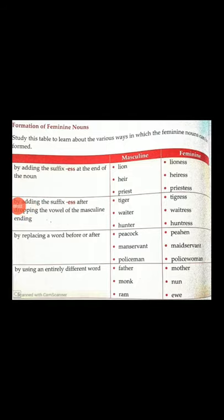Now we will be learning the formation of feminine nouns — how to form them. There are three ways of forming the feminine of nouns. The first way is by adding the suffix -ess at the end of the noun, or by adding -ess to the masculine. For example, author — the feminine gender is authoress. We added -ess to the masculine gender author.